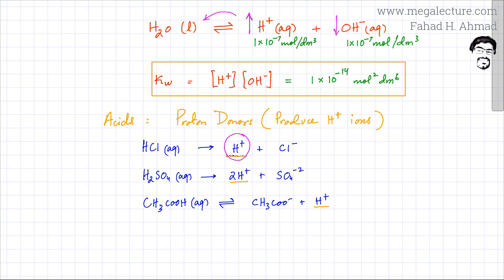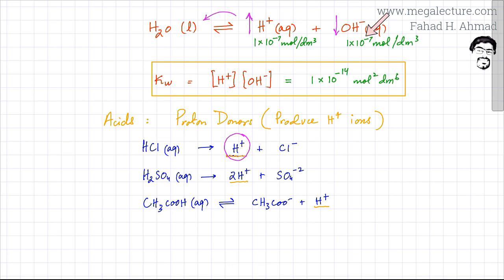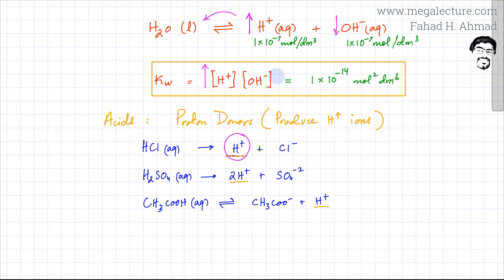If you add acid to water, H⁺ ions increase. Some H⁺ ions combine with OH⁻ ions to produce water molecules, so the quantity of OH⁻ decreases. Increasing one ion decreases the other. But looking at the equilibrium constant expression: if you increase [H⁺] by adding an acid, [OH⁻] decreases simultaneously, but the product remains exactly the same — 1×10⁻¹⁴. So in an acidic mixture, there are more H⁺ ions and fewer OH⁻ ions, but KW stays constant.